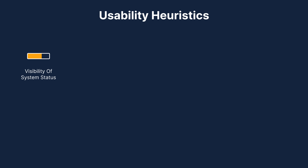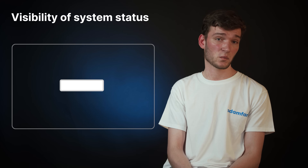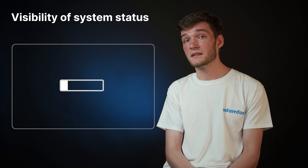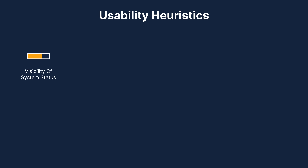The first heuristic is visibility of system status, which means that users should know the system status at all times and get feedback on interactions with it. An example would be writing an email, hitting send, and then nothing happens. The email was actually sent but the system didn't communicate that to you. How should you know if everything went well if there's no feedback? Such an email client would suck.